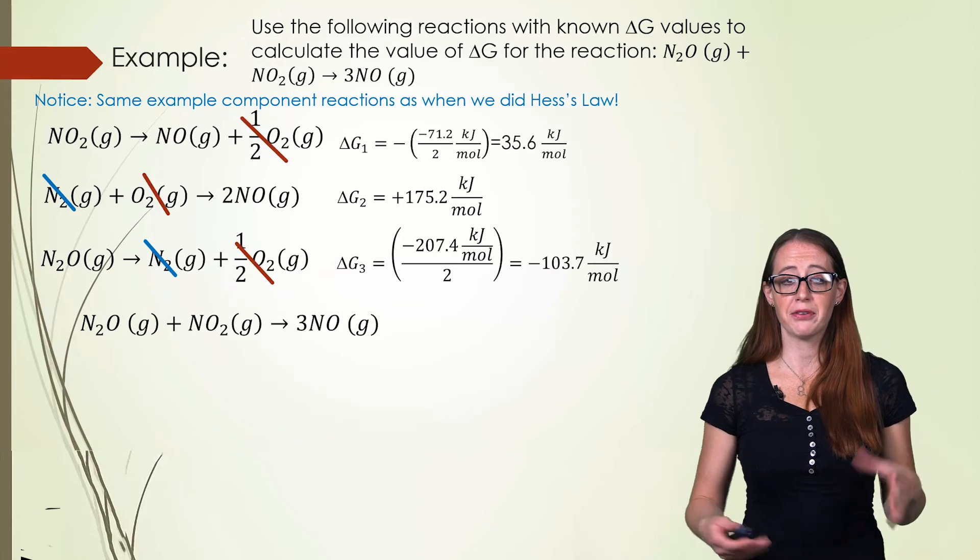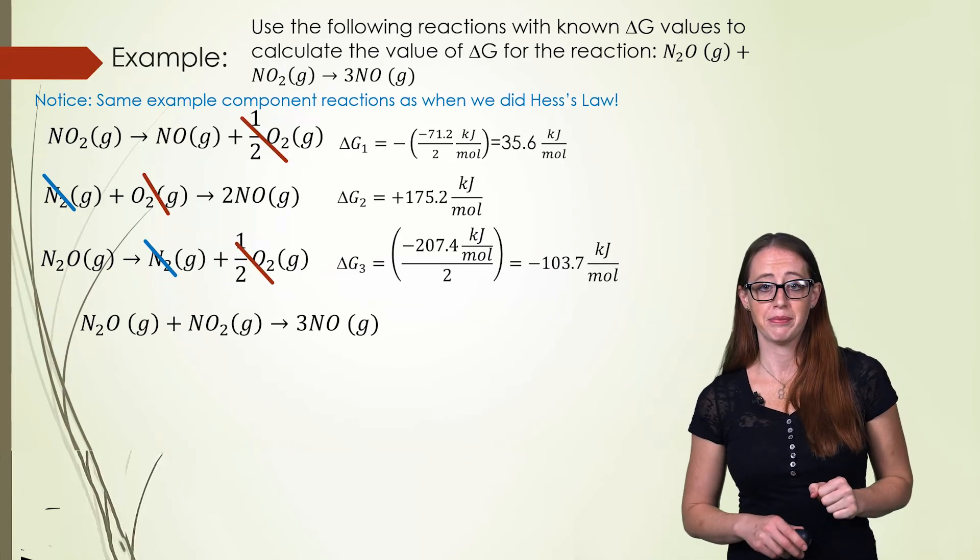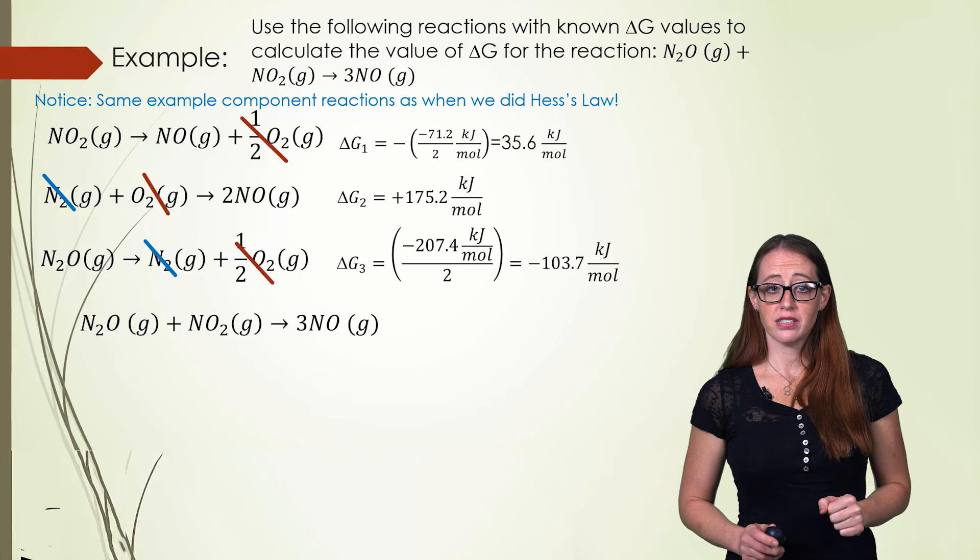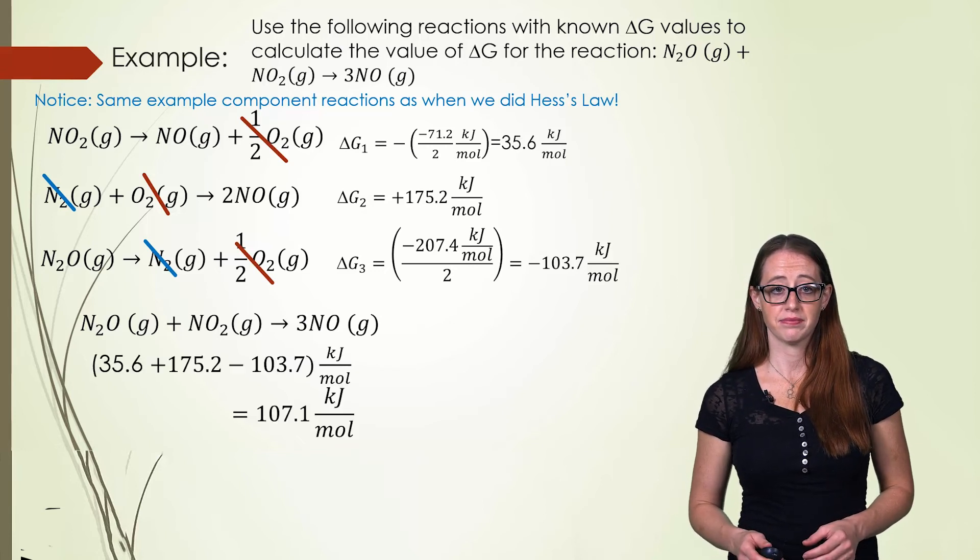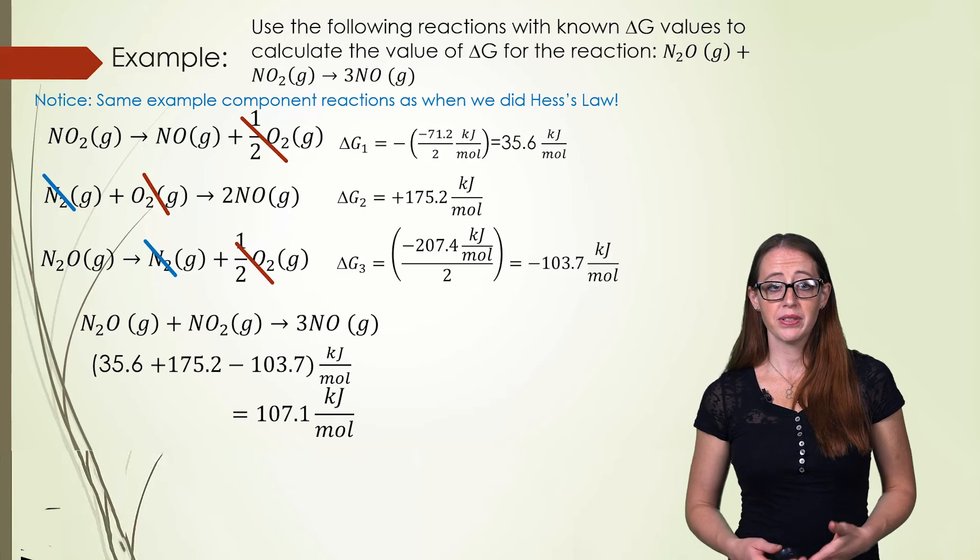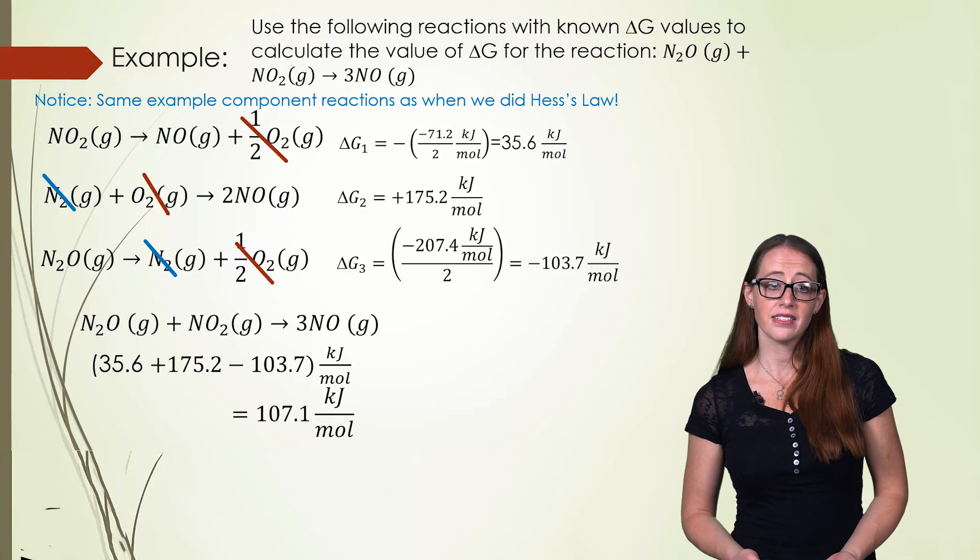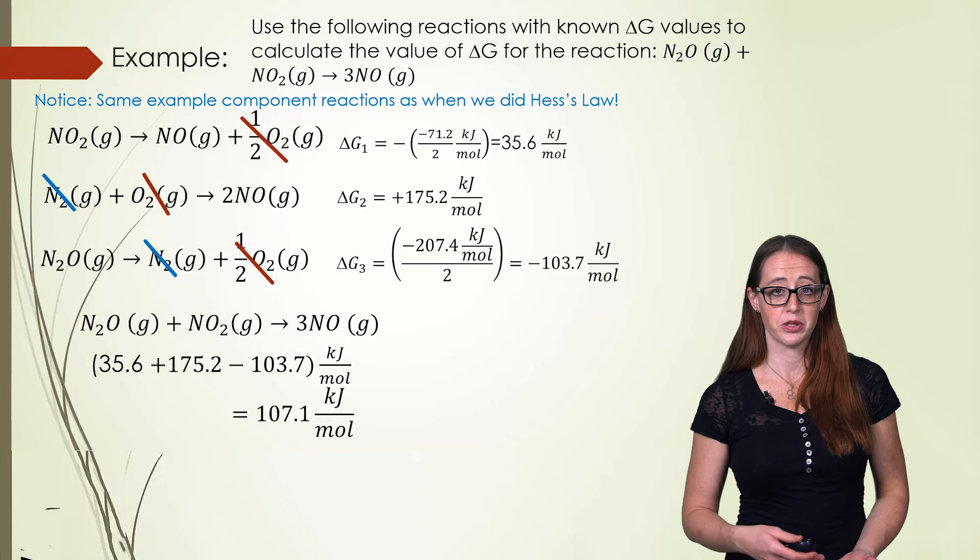Here I've just rewritten everything on the last slide and spaced it out a bit. Now that we have all of these delta G's, all we have to do is add them up to get our final answer. We've gone through, we've added each of the values, we get our final answer of 107.1 kilojoules per mole.